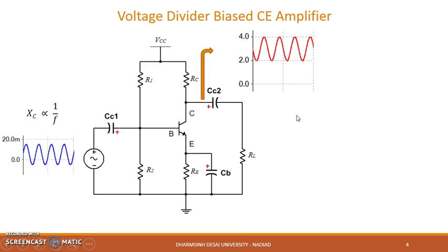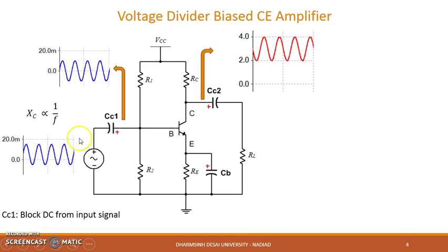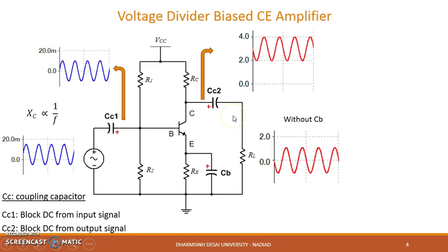Since capacitive reactance is inversely proportional to frequency, it provides very high resistance to the DC signal and hence blocks it. So CC1 will block the DC from the input signal, and CC2 will block the DC from the output signal.